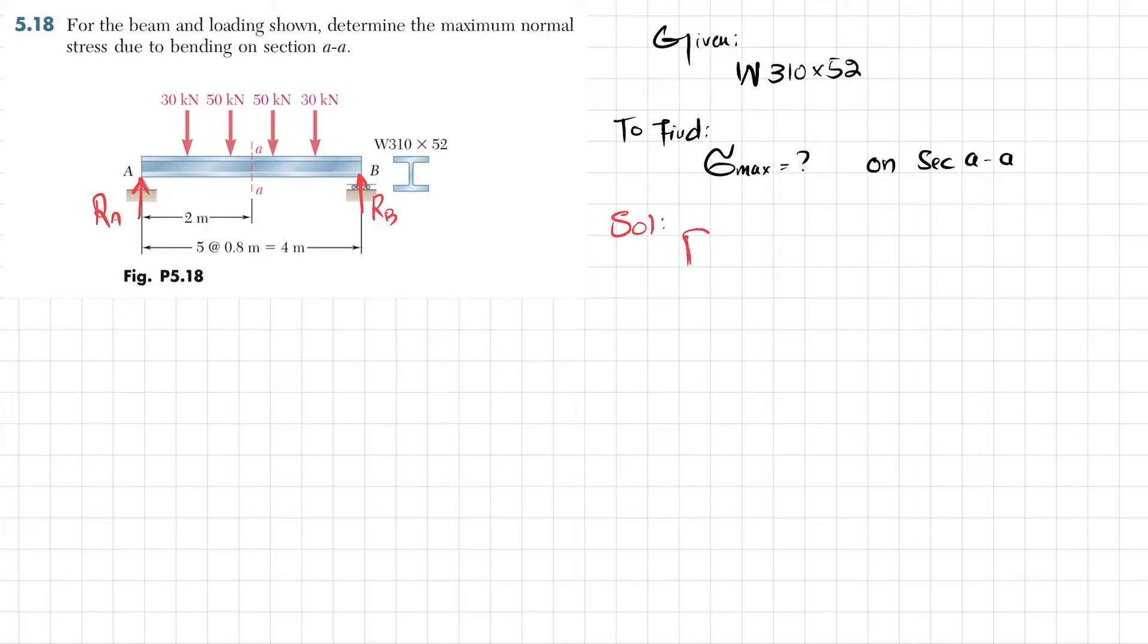In solution, by symmetry we say that RA is equal to RB. Again, by using the sum of all forces along y direction must equal zero, taking upward force as positive: RA minus 30 kilonewtons minus 50 minus 50 minus 30 plus RB, and RB equals RA, so we will write RA. Their sum must equal zero.